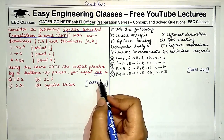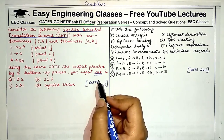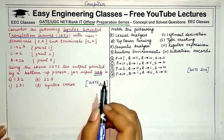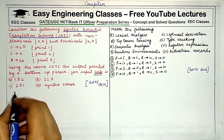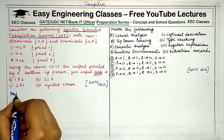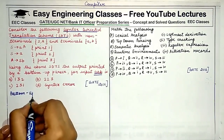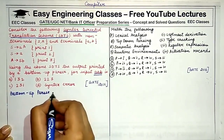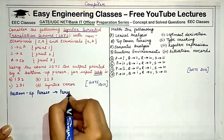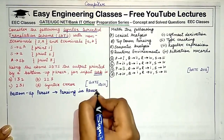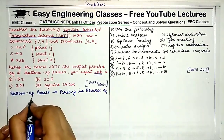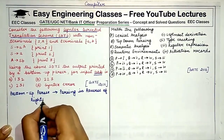A bottom-up parser does the parsing in reverse order of the rightmost derivation. This is very important to understand and remember for this type of question.